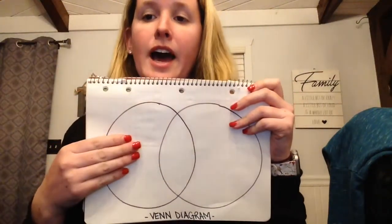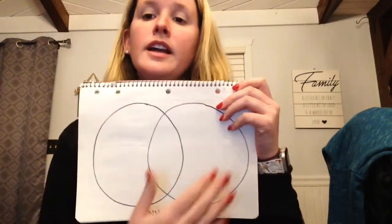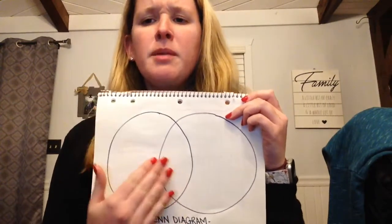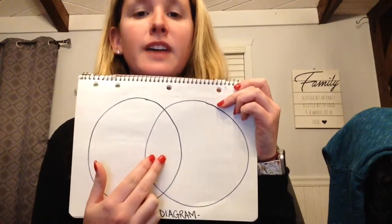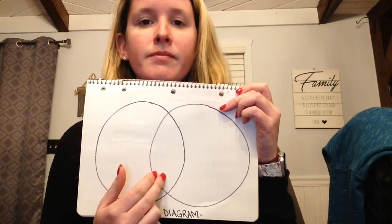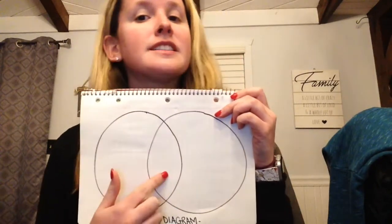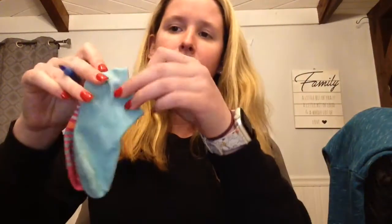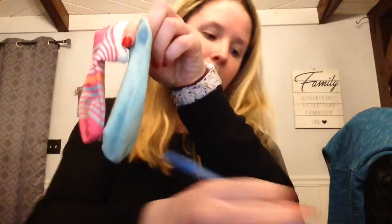I'm going to use my Venn diagram to tell how these socks are the same and how they are different from one another. On one side I'm going to have sock one, and over here I'm going to have sock number two. Anybody remember what goes in the middle of a Venn diagram? The things that are the same about them. So let me write sock one and sock two, and while I'm writing that I want you guys to think of some reasons these are the same.